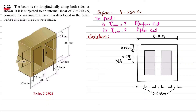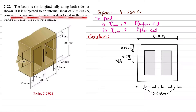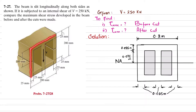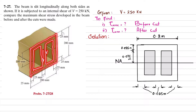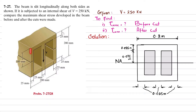Welcome back. Problem 7-27: the beam is slid longitudinally along both sides as shown. If it is subjected to an internal shear of 250 kN, compare the maximum shear stress developed in the beam before and after the cuts were made. This is the cross section of the beam acted upon by a shear.